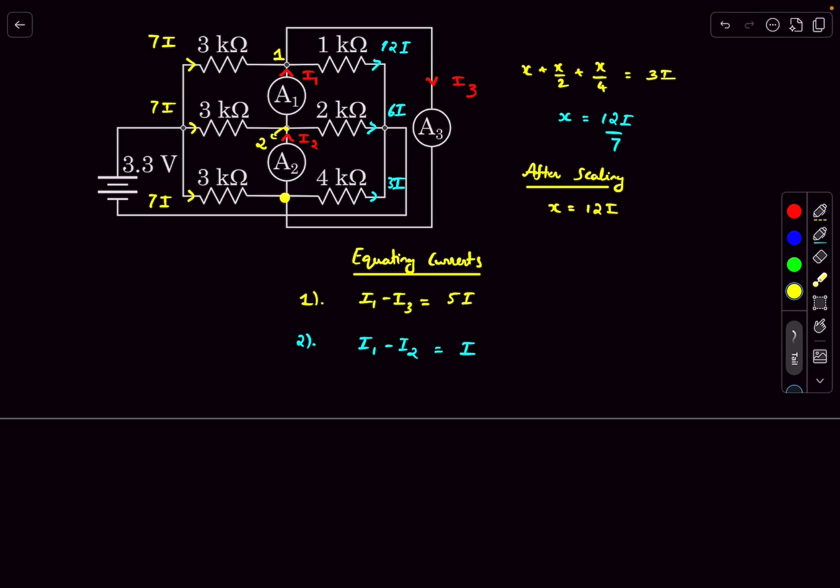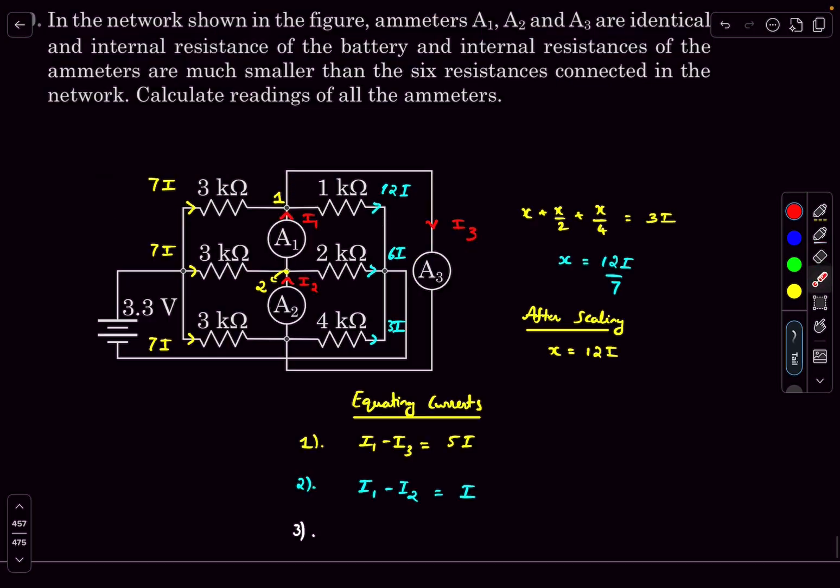So that's going to be a useless equation. So in order to obtain one more relation, what we will do is we'll apply KVL in this loop containing the three ammeters. The potential drop across A1 is i1 times the resistance of the ammeter, which let's just take it as small r.